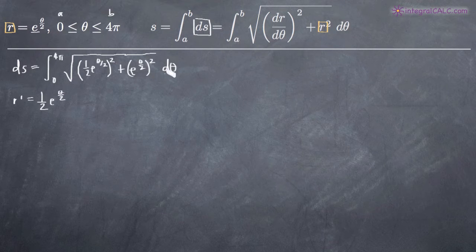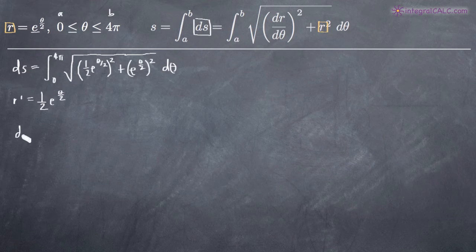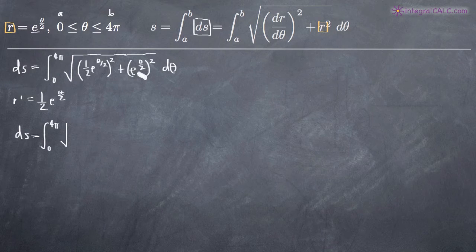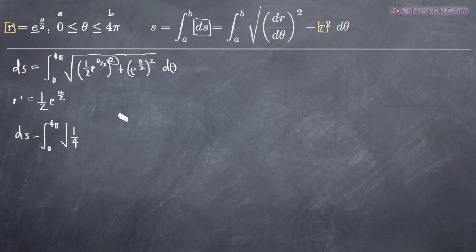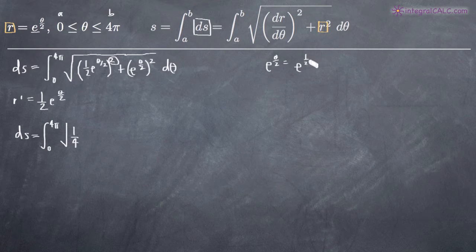So now this is just a matter of simplifying what's inside of our integral and then evaluating on the range zero to four pi. To simplify what's inside the integral, first we're going to square what's under the square root sign because we have two things that are squared. To evaluate the first part and square it, we'll get one fourth — that one half squared is going to be one fourth — and then e to the theta over two.